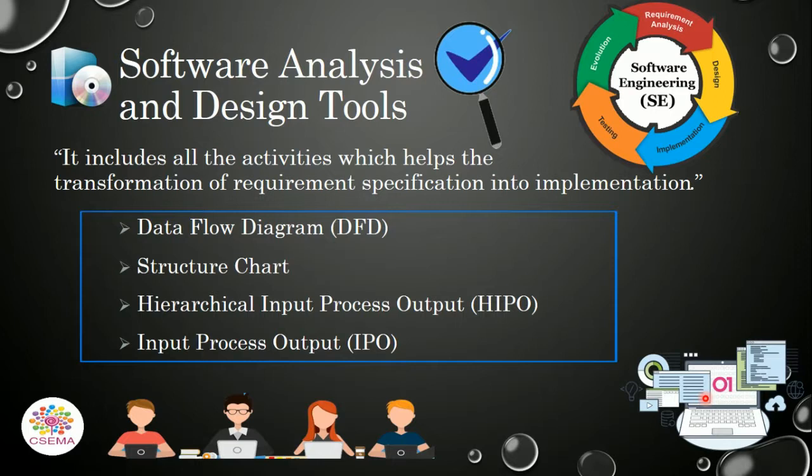The software analysis and design tools are basically the group of activities that helps to transform the requirement specification into implementations. And these tools are listed here: data flow diagram, structure chart, hierarchical input process output, and input process output.